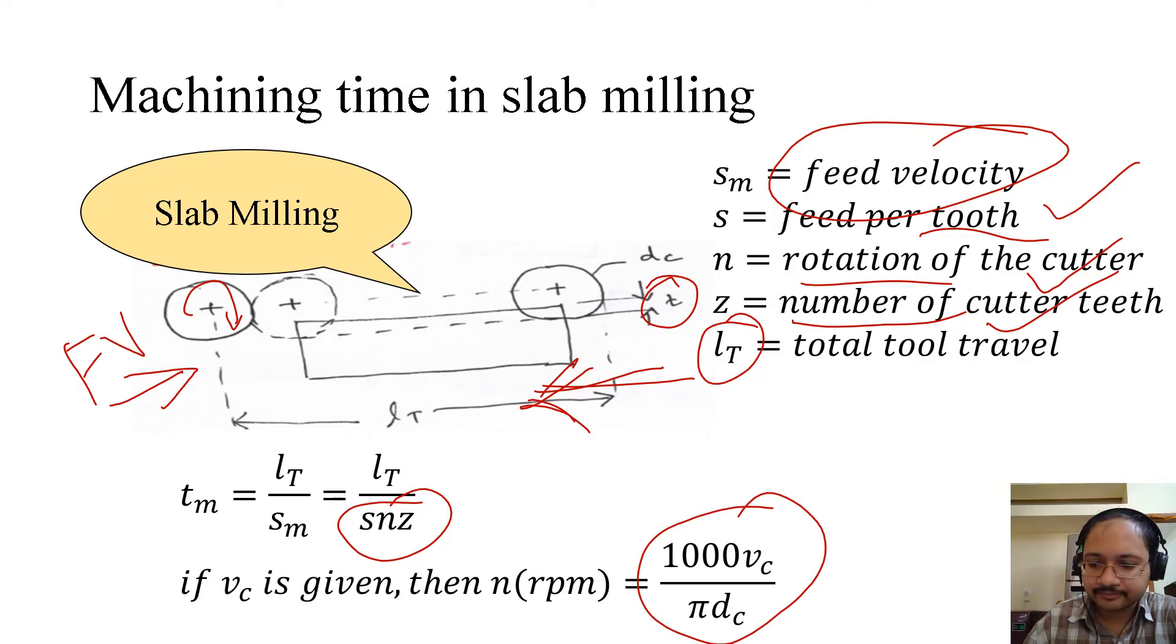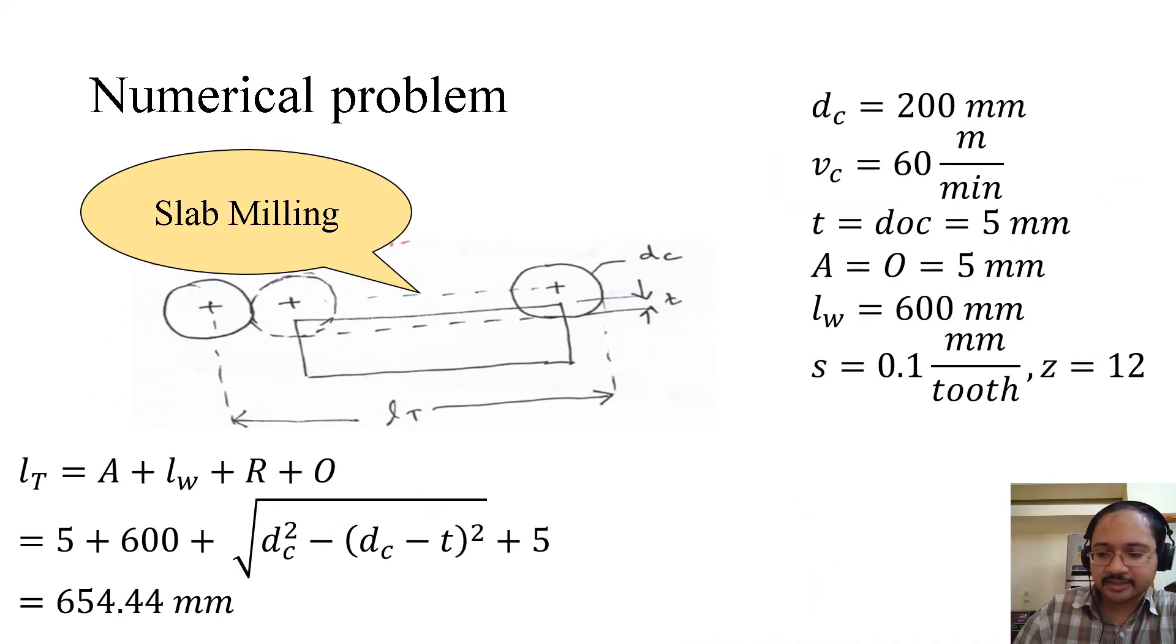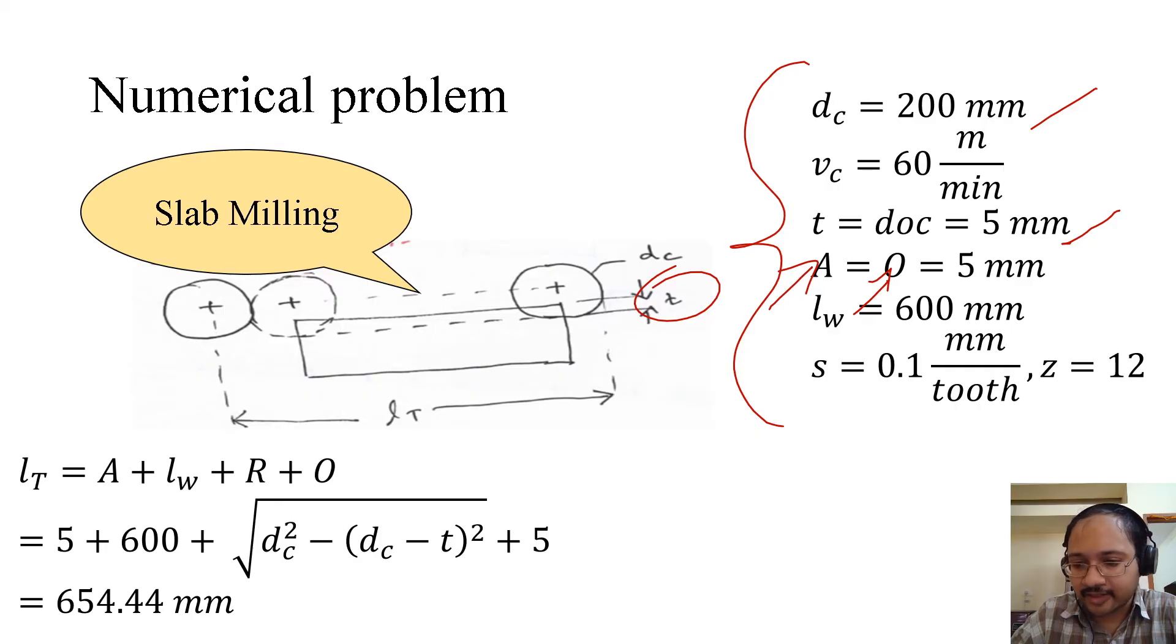Let us solve a numerical problem and understand this further. These are the information which is already there: the diameter of the cutter is 200 millimeters, vc is 60 meters per minute, t or depth of cut is 5 millimeters, approach plus over travel is 5 millimeters, length of the workpiece is 600 millimeters, and s is the feed which is 0.1 millimeter per tooth. Don't forget this unit - it is per tooth in case of milling, and z is 12 cutting teeth.